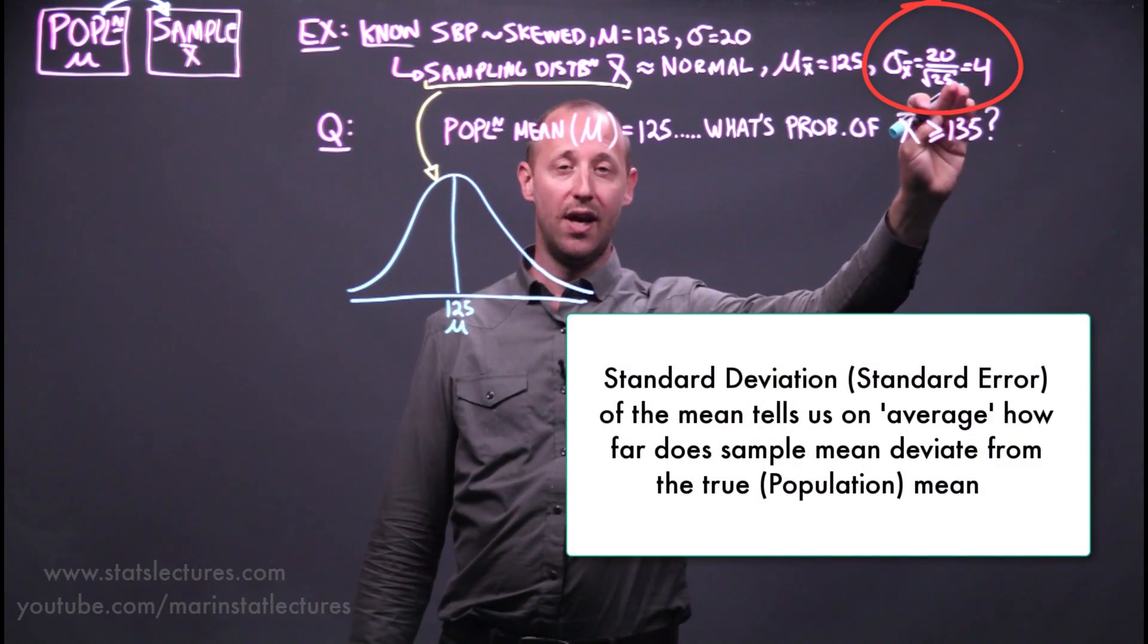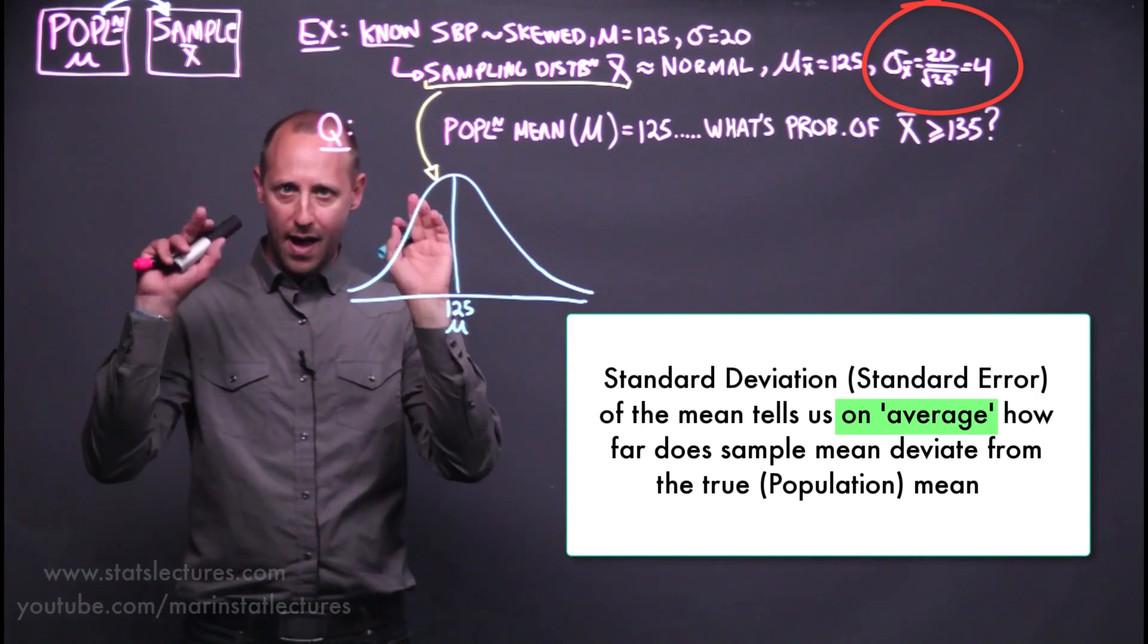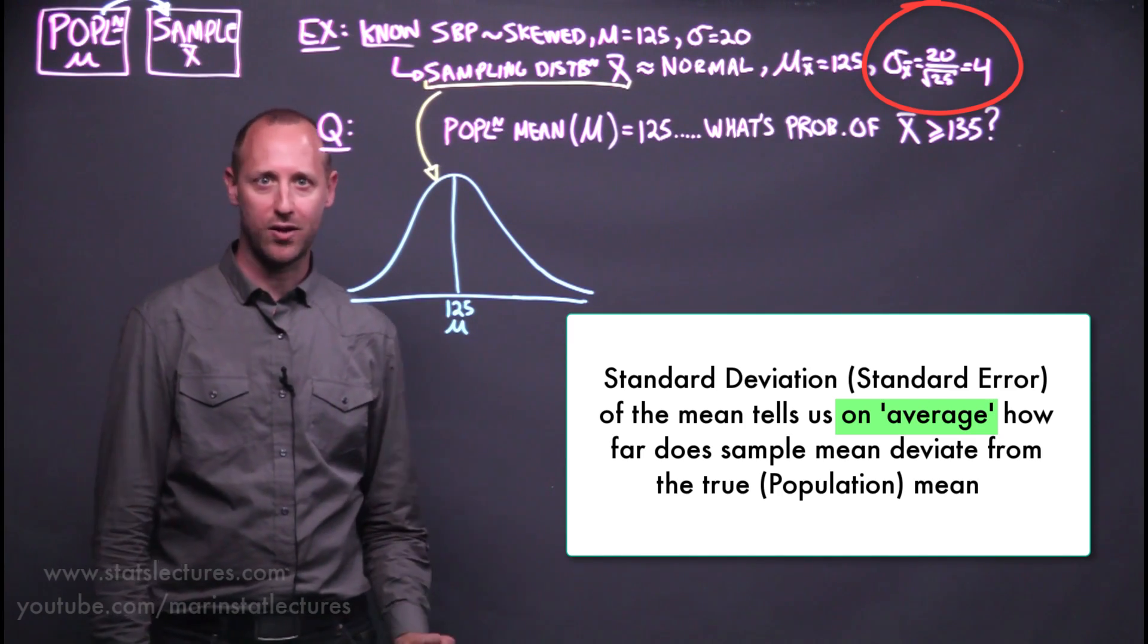This tells us, on average, how far should our sample mean move from the true population. It's not quite the mathematical average, but close enough.